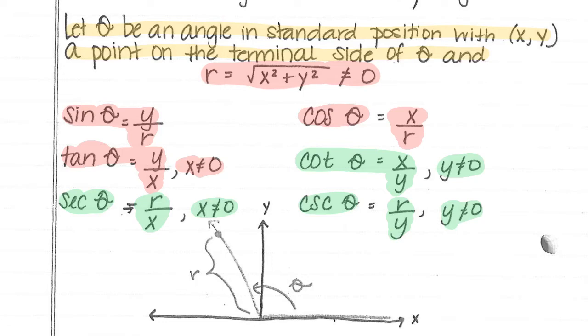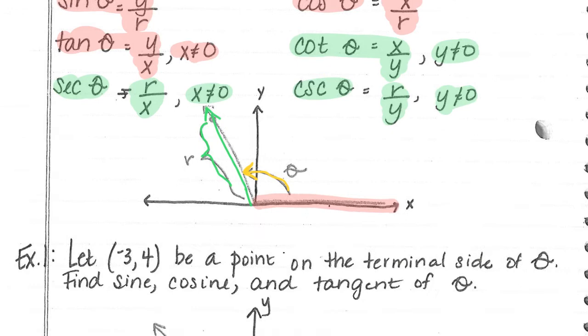So let's talk about a few things. This is the initial side. When I draw theta, this is where theta is. This is called the terminal side. So the terminal side is the r.